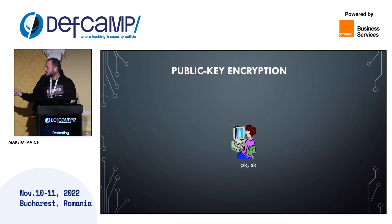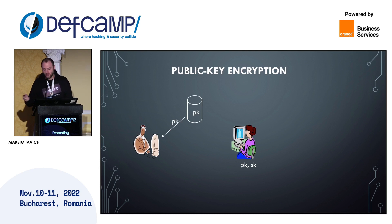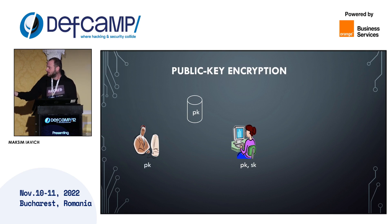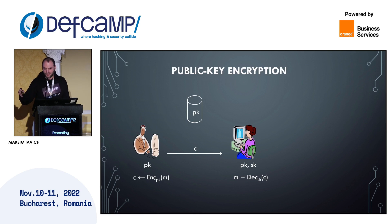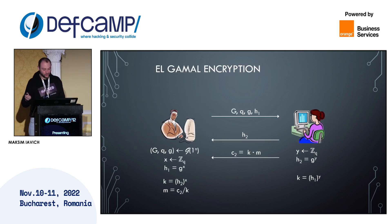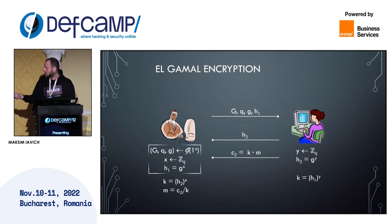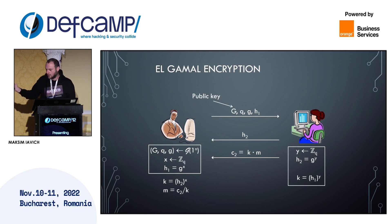Here is the idea of public key encryption. Alice generates a public and a secret key and uploads the public key to a repository. When Bob wants to encrypt the message he goes to the repository and uses the public key to encrypt. To decrypt the message, Alice uses her secret key. So everybody can encrypt the message but only Alice can decrypt it because she has the secret key. Let us look at ElGamal encryption: Bob has g^x, the public key is the group, the order of the group, the generator, and h1 = g^y.